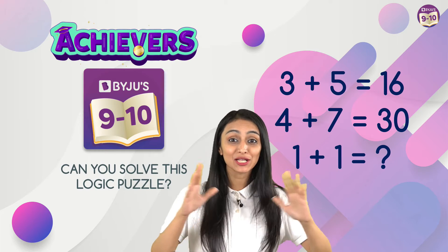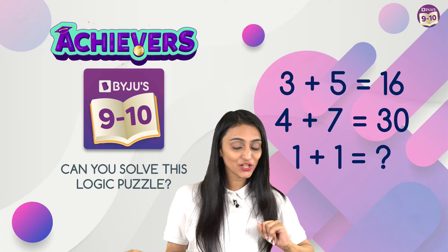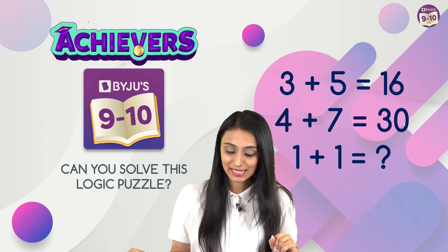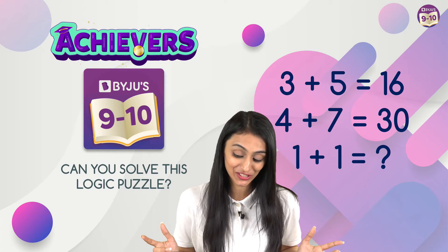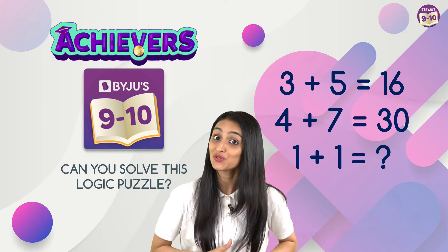Hey students, today I have come up with an interesting logic puzzle. So as you can see here, we have 3 plus 5 equals 16, 4 plus 7 equals 30, what 1 plus 1 is going to be? Obviously the answer is not 2 over here, it's not that simple and this looks tricky also.